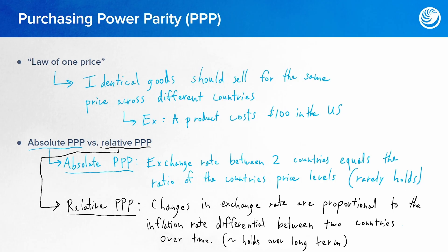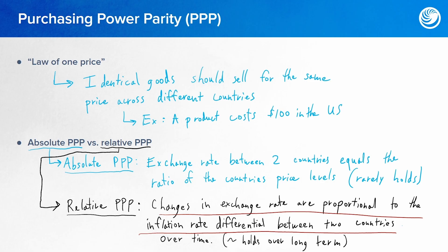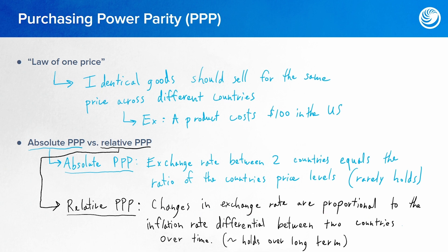An improvement on that theory, in some ways, is relative PPP, which is a theory that states that changes in the exchange rate are proportional to the inflation rate differential between the two countries over time. This asserts that spot rate change is equal to inflation differentials. In general, relative PPP holds more so over the long term relative to absolute PPP, which rarely holds.